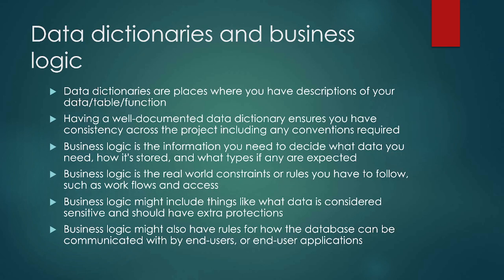Data dictionaries are where we're going to have descriptions of our data tables and functions. The data dictionary means you're going to have some variety of consistency across your data, and it should include any conventions required. For example, a data dictionary should have things like: this is the title of the book, this is the author — first author only — and it's going to be set up as last name, comma, first name, space, middle name if applicable. You want to spell it out clearly: do you have first name last name or last name first name? Do you include middle names? Do you have separate fields for first, last, and middle? Because you don't want to just say you can tell the difference between a first name and a last name — that's a poor assumption.